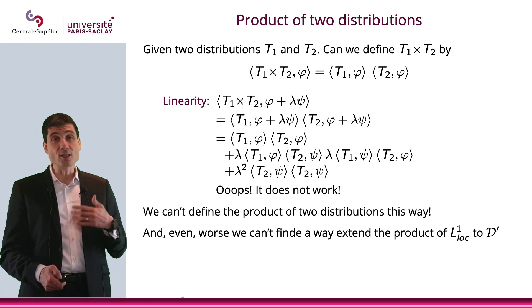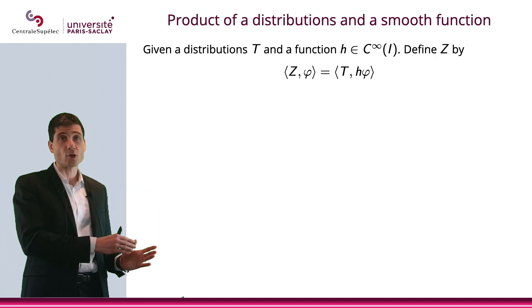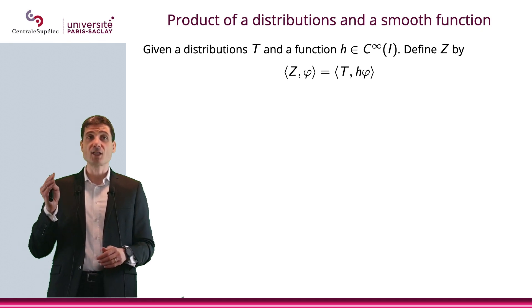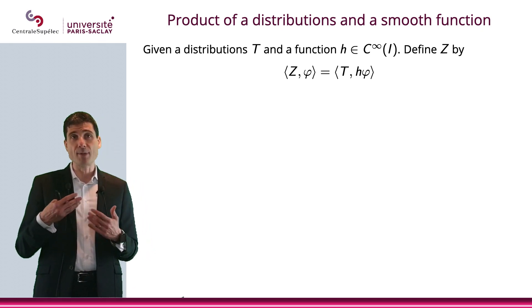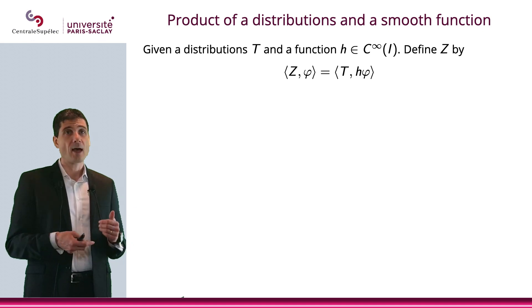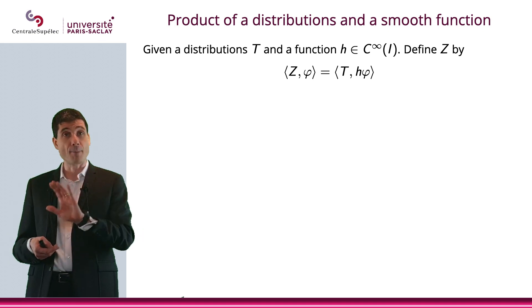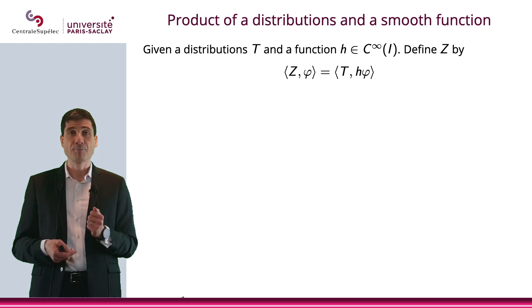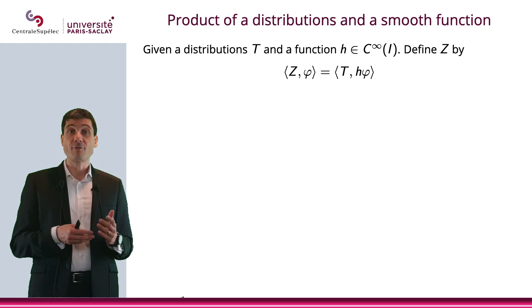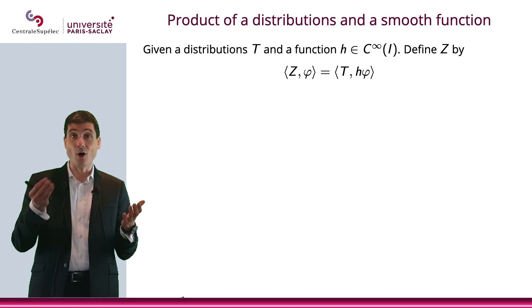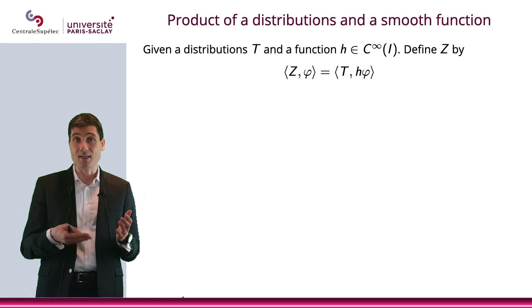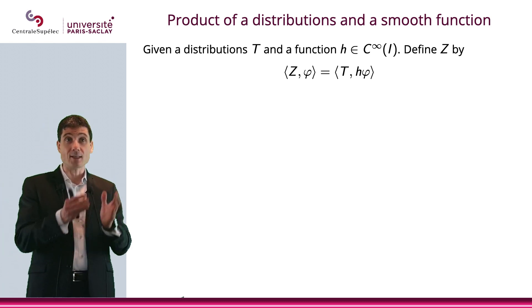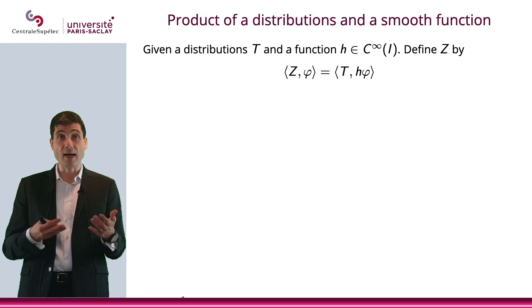It doesn't work. What we can do, though, is the product of a distribution and a smooth function. So that is going to work. Consider a distribution T and consider a smooth function h. And that will be basically a function that is C∞. I'm not asking C∞ with compact support, I'm not asking h to be a bump function, I'm just asking h to be C∞. I will define an application Z from D(I) to R. And that's a candidate to become a distribution in a few minutes, obviously. And that function Z will be defined as follows: Z(φ) equals T applied to hφ.